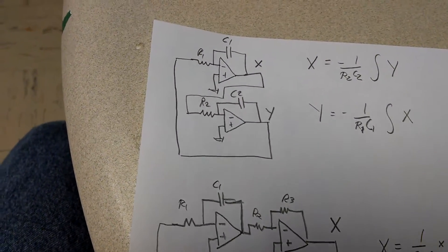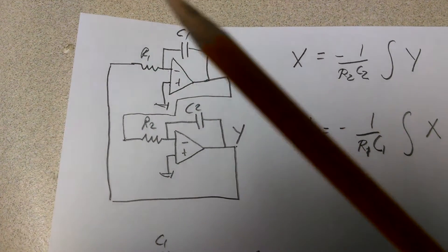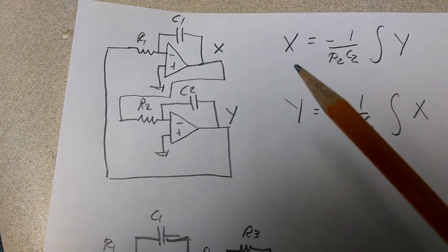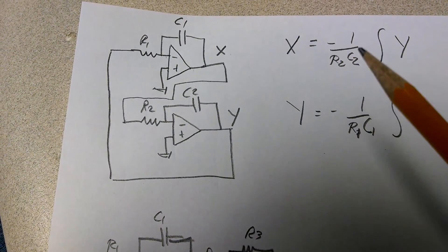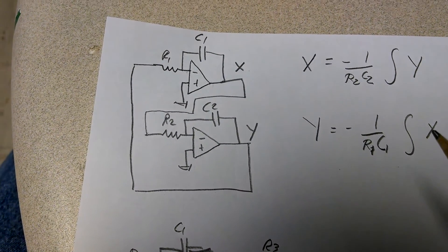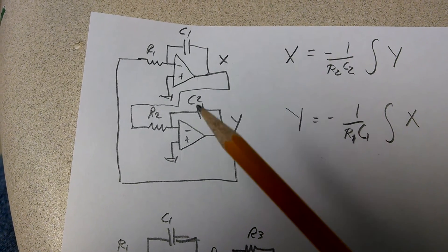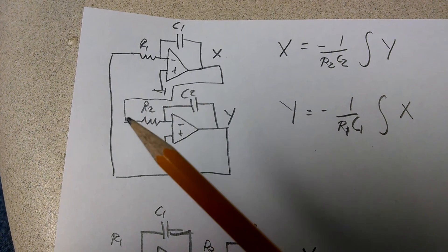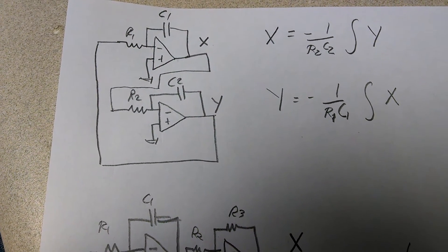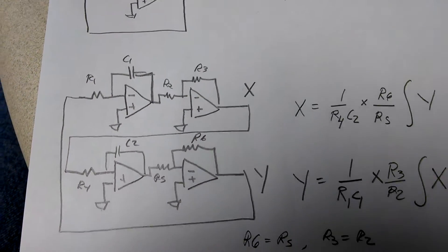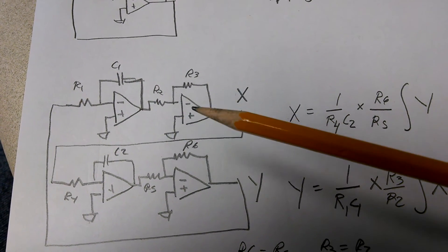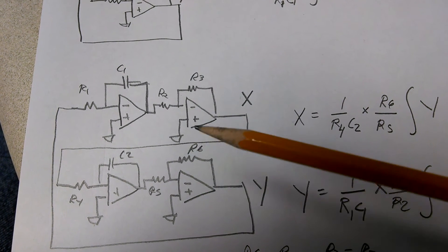Let's just add a few more examples here. So now you can start to combine blocks. What if I wanted x equals minus 1 over r2c2 integral of y and y minus the integral of x? Well, you just feed the x into the y, and the y into the x. And in a similar fashion, if I wanted the positive, I would add these inverting amplifiers.